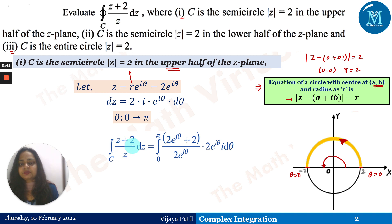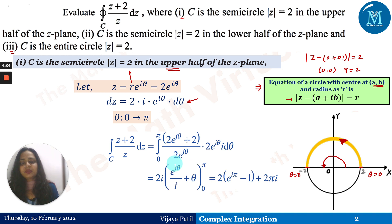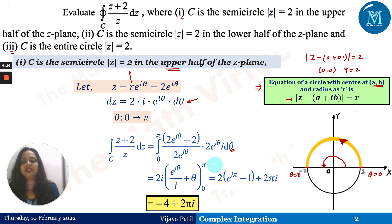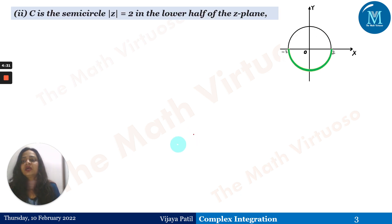The integral ∫(z+2)/z dz becomes an integral from 0 to π where we replace z with 2e^(iθ) everywhere, and dz with 2i·e^(iθ) dθ. Solving this straightforward integration with respect to θ over [0, π], we reach the answer: −4 + 2πi.